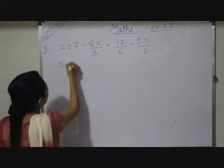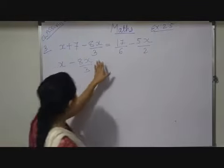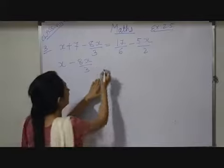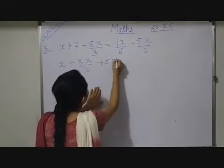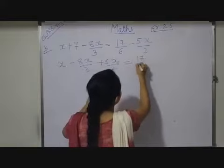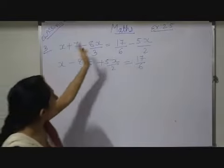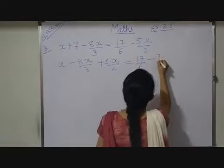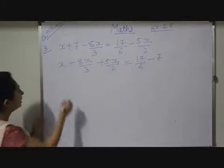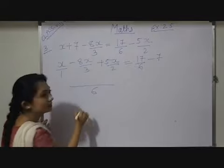So here x minus 8x by 3 and this one minus 5x while I will shift it to LHS part negative will be positive 5x by 2. Here which is equals to 17 by 6 already it was there. Now this plus 7 I am shifting here so it will be minus 7. Now here to avoid confusion write down 1 in a denominator. So your LCM is 6.